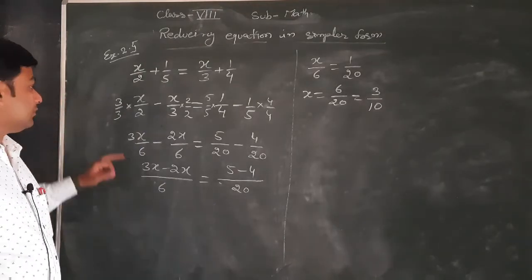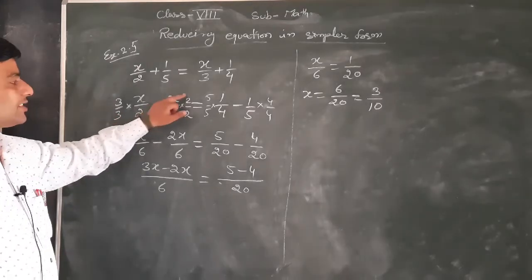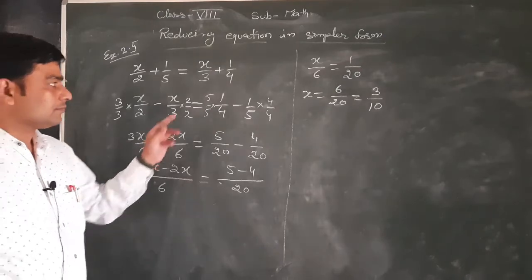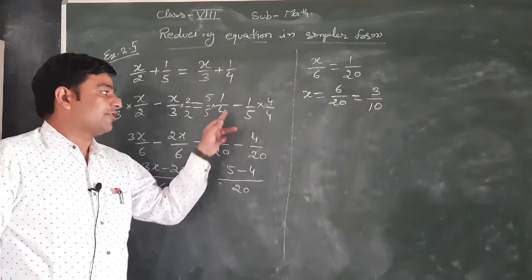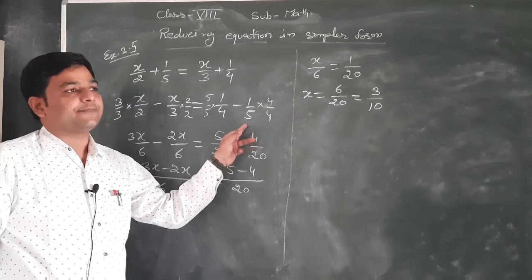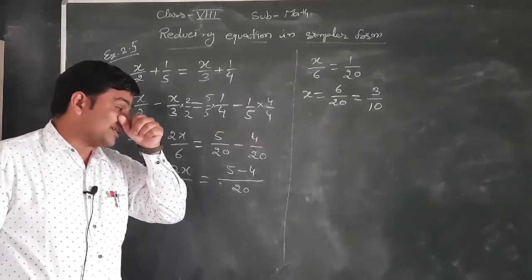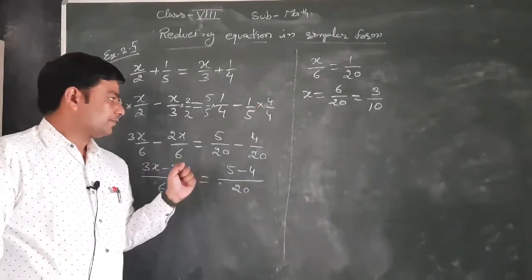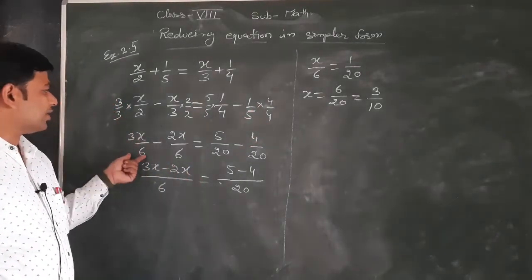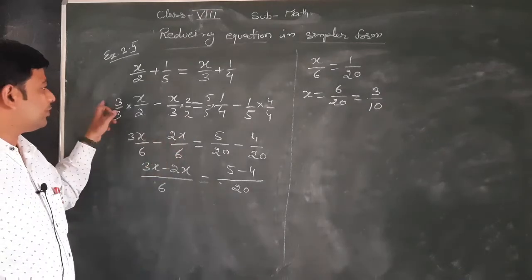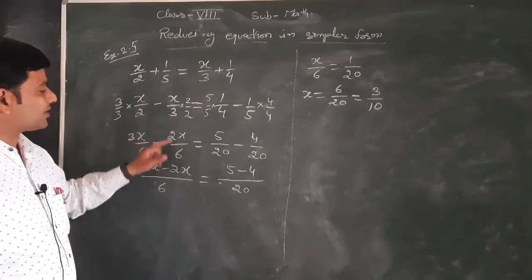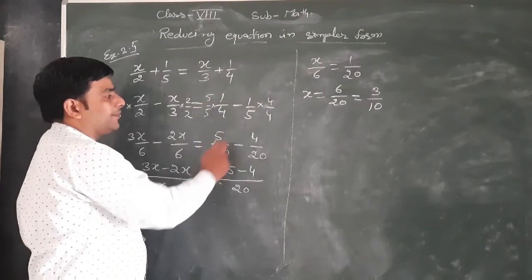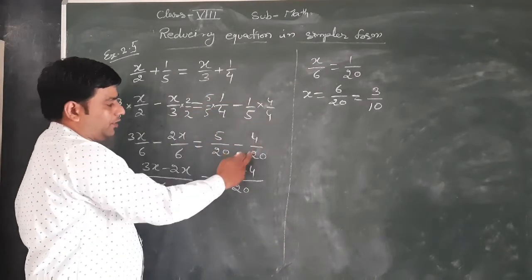For denominators 2 and 3, we multiply and divide to make 6 the common denominator. Similarly, for 1/4 and 1/5, the LCM is 20 — so 1×5 = 5/20 and 1×4 = 4/20.